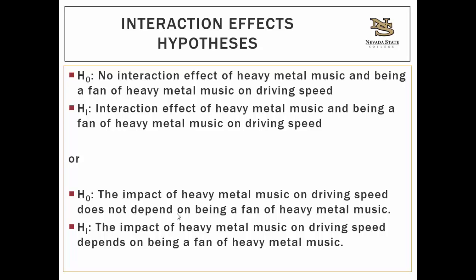Typically when a researcher does a factorial ANOVA, they have an expectation about the two independent variables interacting together. For example, people who like heavy metal music and listen to it in the car might drive really fast. But people who don't like heavy metal and have to listen to it might be annoyed or distracted and drive slower. So the effect of heavy metal music depends on being a fan — if you're a fan, it makes you drive faster; if you're not, it might make you drive slower.